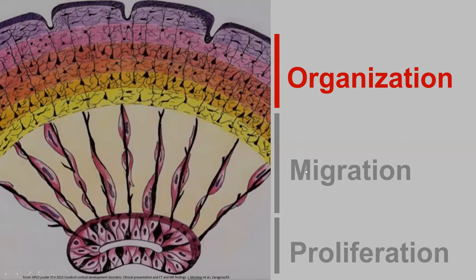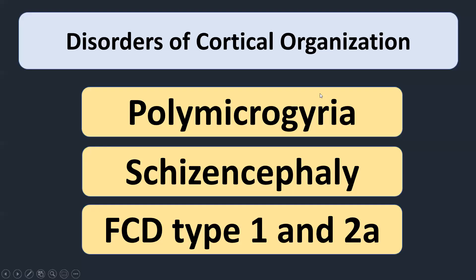That concludes our discussion on disorders of neuronal migration. For the final topic, we will discuss malformations of neuronal organization. There are three to discuss: polymicrogyri, schizencephaly, and focal cortical dysplasia type 1 and 2a. In the previous session we talked about focal cortical dysplasia type 2b as a disorder of neuronal proliferation, but type 1 and 2a are disorders of neuronal organization.